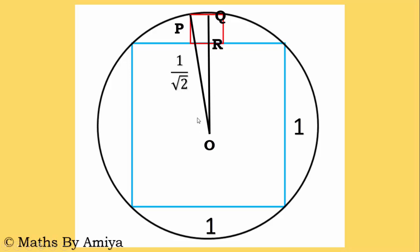So we have OP is 1 by root 2. R is the point at which OQ intersects the blue square. Since the side is 1, we need to work on triangle OPQ. That is a right angle triangle because it is perpendicular. We know the side of blue square is 1 centimeter, so we can say the length of OR is half, half of the blue square.